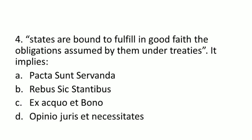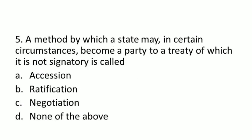Our next important question: a method by which a state may in certain circumstances become a party to a treaty of which it is not a signatory is called what? Our options are: A) Accession, B) Ratification, C) Negotiation, D) None of the above. The answer is A — accession.